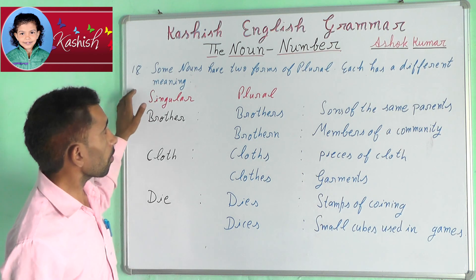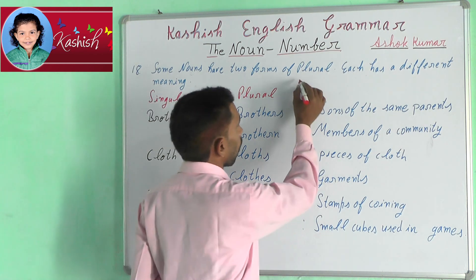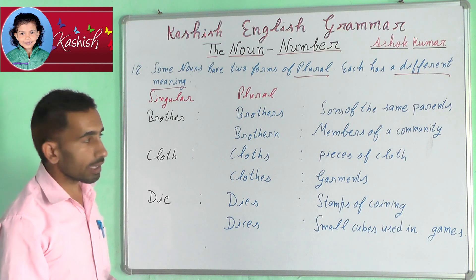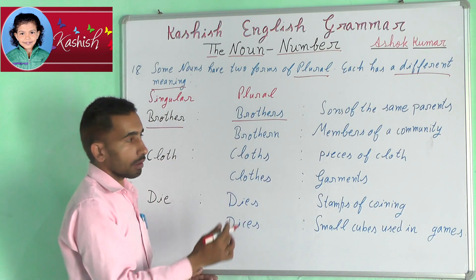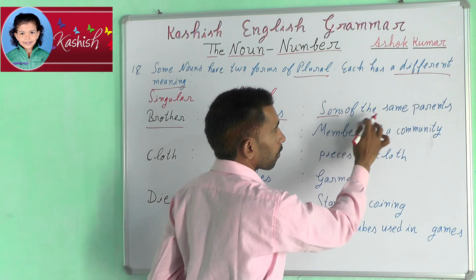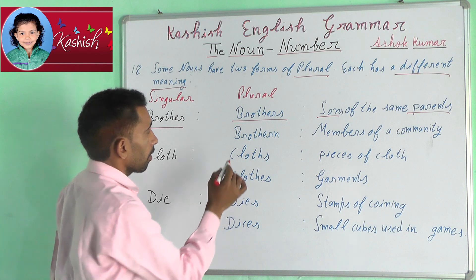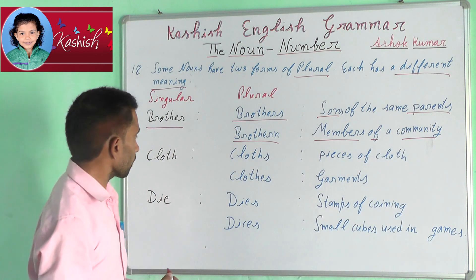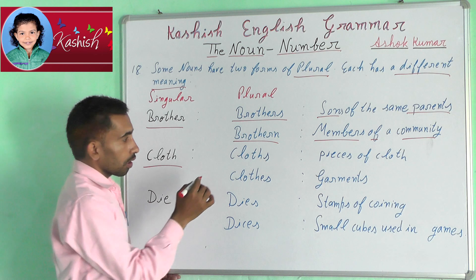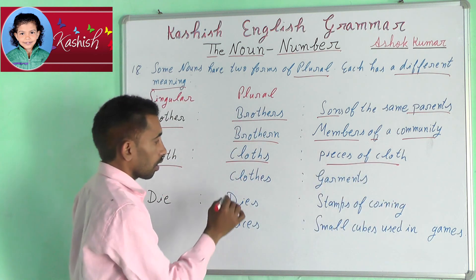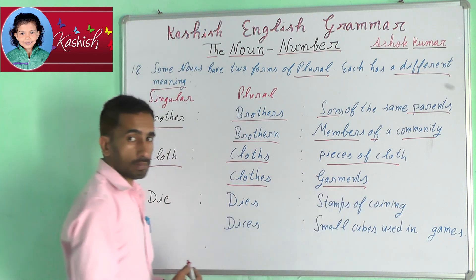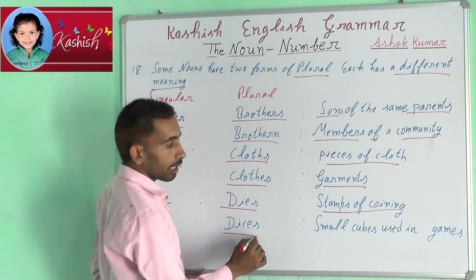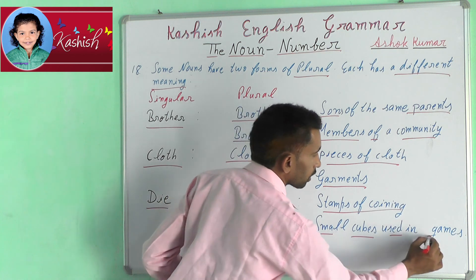Eighteenth rule: some nouns have two forms of plural, each with a different meaning. For example: brother → brothers (sons of the same parents) or brethren (members of a community). Cloth → cloths (pieces of cloth) or clothes (garments). Die → dies (stamps for coining) or dice (small cubes used in games).